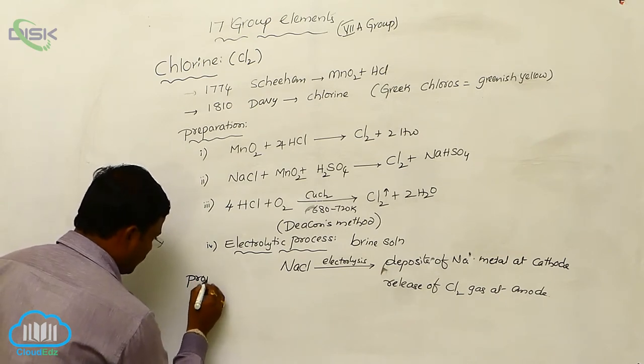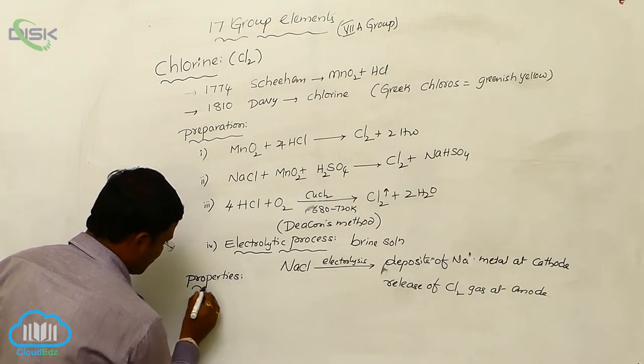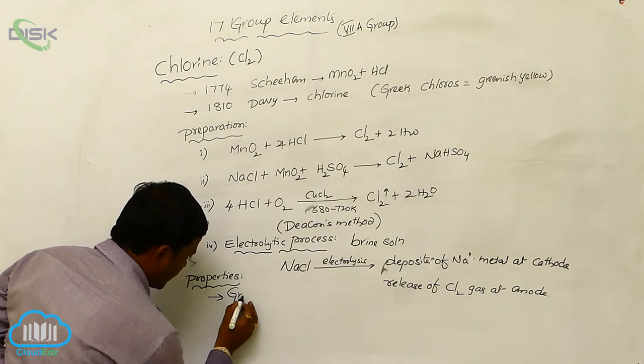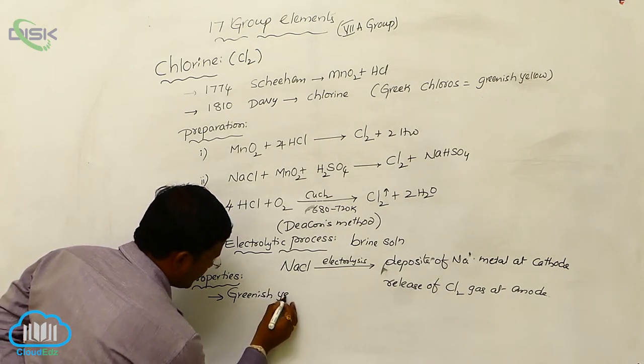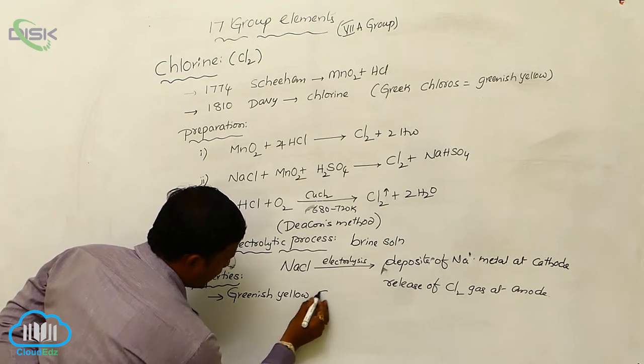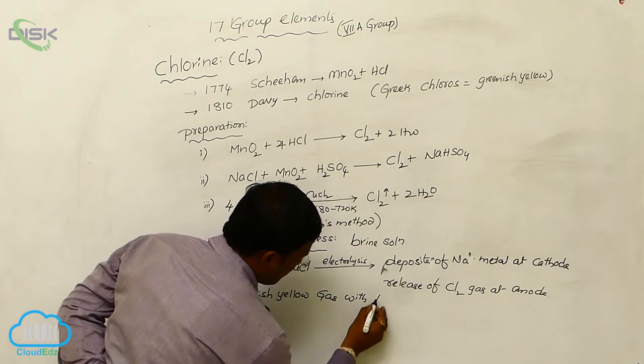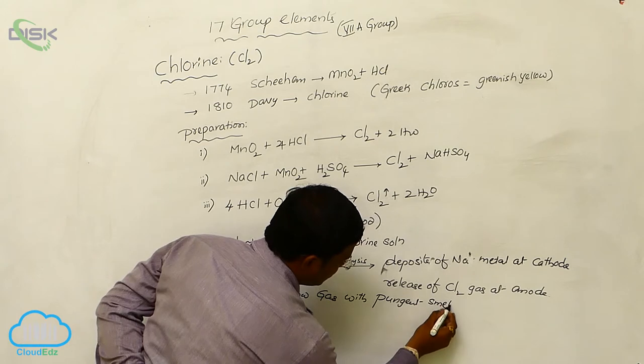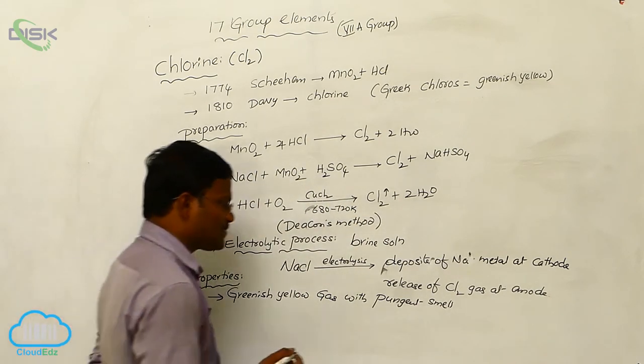Properties of chlorine. Here, it is a greenish-yellow gas with pungent smell. Greenish-yellow gas with pungent smell.